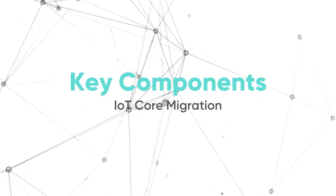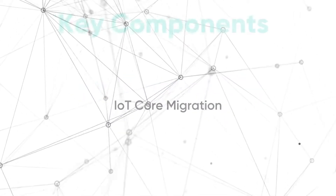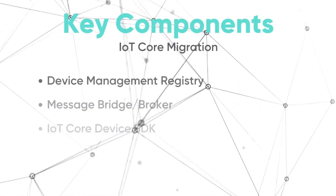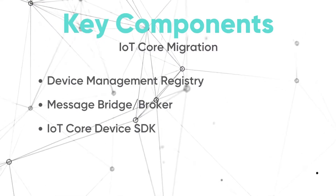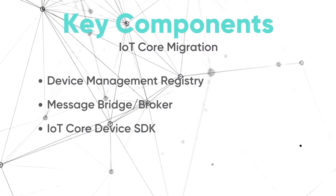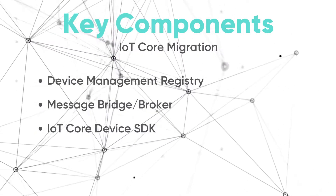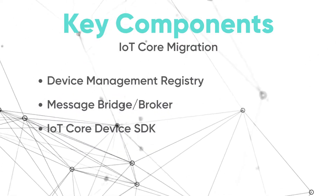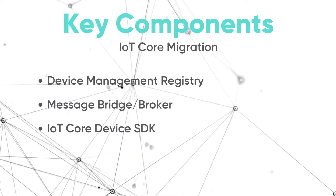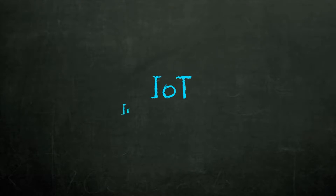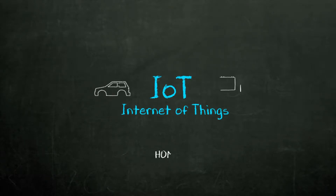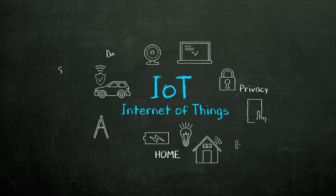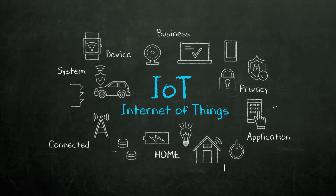These are the key components of an IoT Core migration: device management registry, message bridge or broker, and an IoT Core device SDK. Before digging into the migration steps, here is a quick overview of the key components of IoT Core involved in a typical migration.